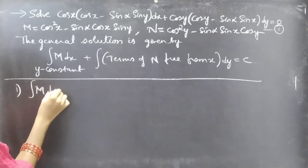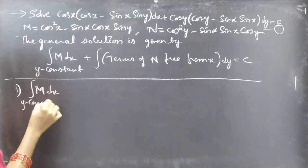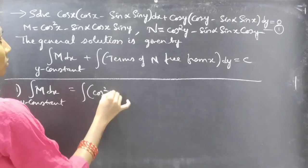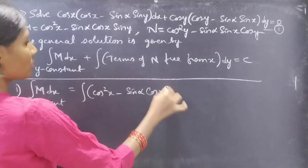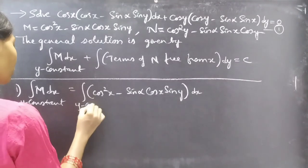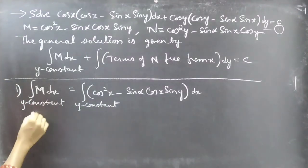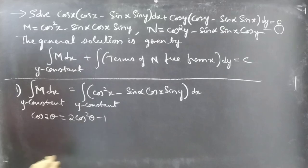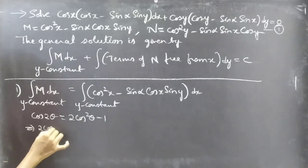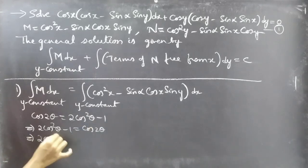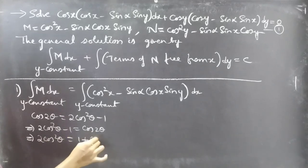Let's now find these two integrals separately, beginning with ∫M dx treating y as constant. This equals the integral of cos²(x) - sin(α)cos(x)sin(y) dx, where y is constant. We use the identity cos(2θ) = 2cos²(θ) - 1, which gives cos²(θ) = (1/2)(1 + cos(2θ)).